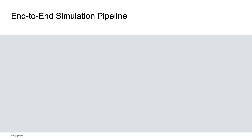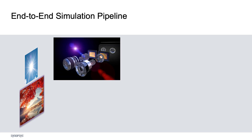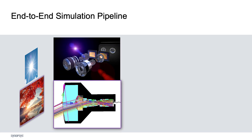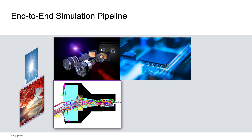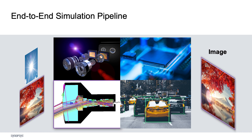It models the entire imaging pipeline, including user-specified scenes, external light sources, optics, optomechanical parts and housing, image sensors, and customizable image signal processing algorithms, which is often referred to as ISP.